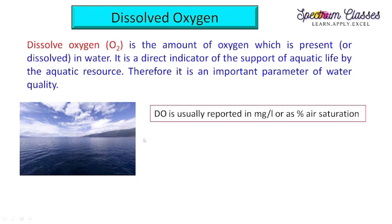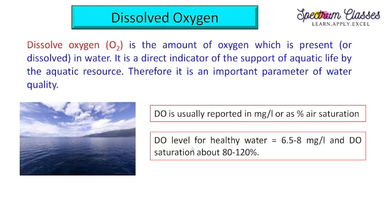Now the question comes: how is it going to be measured and what are the units? Dissolved oxygen is usually reported in milligrams per liter or as percentage air saturation. The dissolved oxygen for healthy water is reported between 6.5 to 8 milligrams per liter, or the dissolved oxygen saturation level is between 80 to 120% for healthy water.